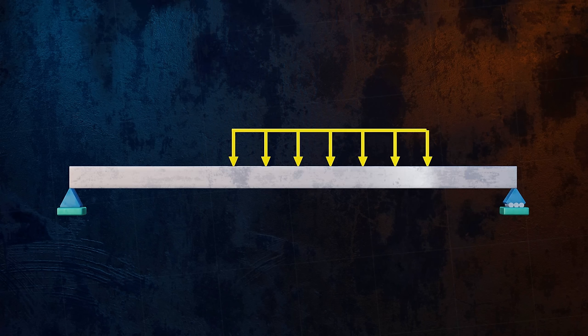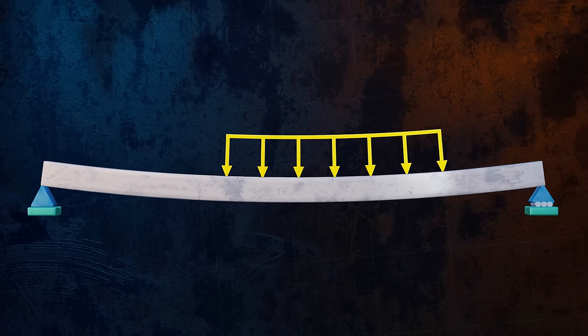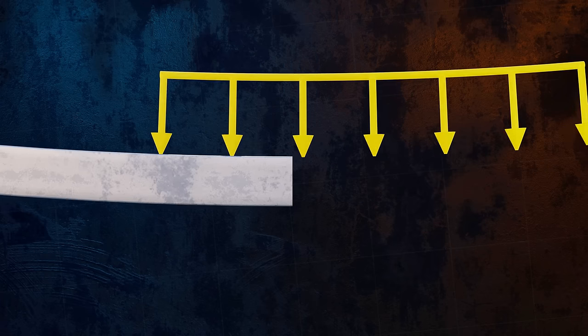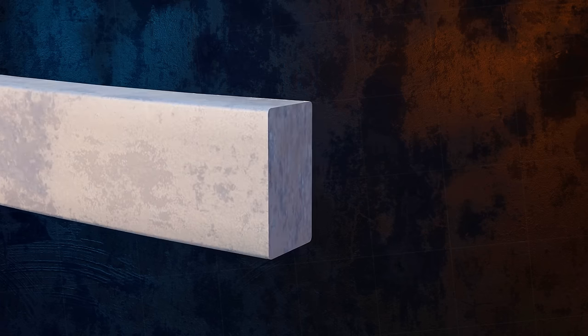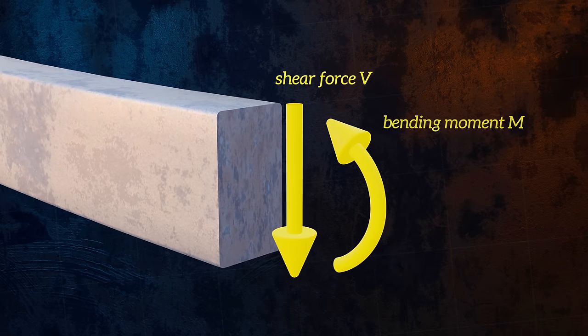If we apply a load to a beam it will deform by bending. This generates internal stresses, which can be represented by a shear force acting in the vertical direction, and a bending moment.